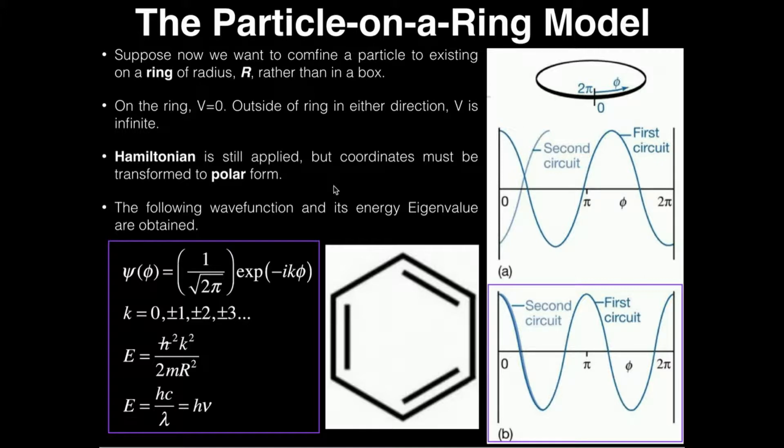Now, let's discuss the output of the particle in a ring model. We get a wave function in terms of an angle called phi. Phi is this angle right here. It's basically your theta. In quantum mechanics it's defined as phi because we're dealing with spherical coordinates eventually. The wave function is this normalization constant, 1 over the square root of 2 pi, and then you have this exponential function, e to the negative ik phi.